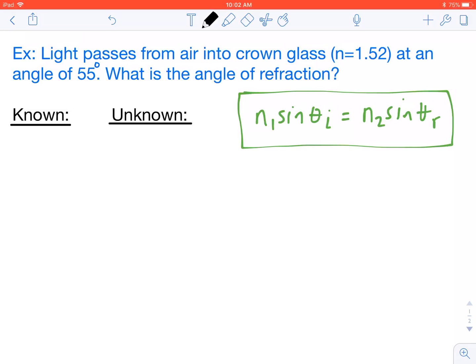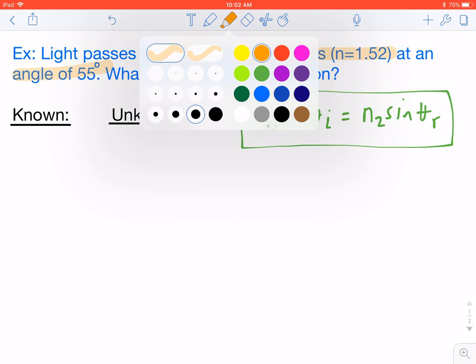So we take a look at our problem here. We have light passing from air into crown glass at an angle of 55 degrees, and we want to know what is the angle of refraction. So first thing, we know that our two boundaries are air and crown glass, and our index of refraction for crown glass is given to us, 1.52, and we have an angle of 55 degrees. We want to know what is the angle of refraction.